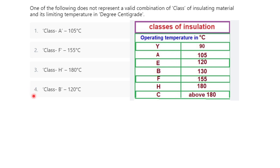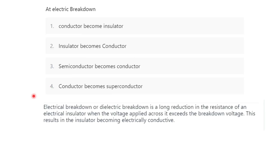Next question: at electric breakdown — conductors become insulators, insulators become conductors, semiconductors become conductors, or conductors become superconductors? At electric breakdown, insulators become conductors. Electric breakdown or dielectric breakdown is a large reduction in the resistance of an electric insulator when the voltage applied exceeds the breakdown voltage, causing the insulator to become electrically conductive. So option 2 is correct.